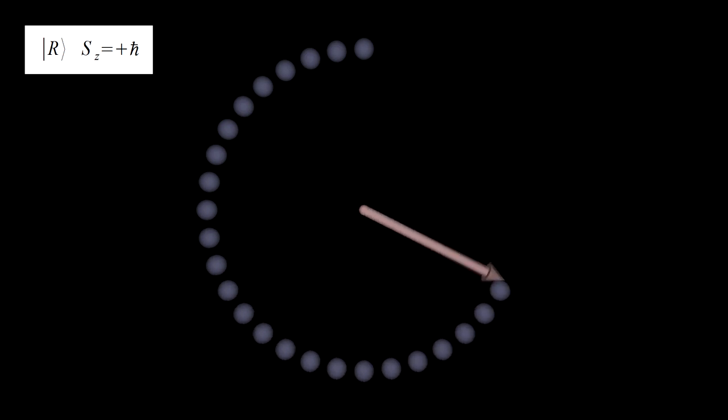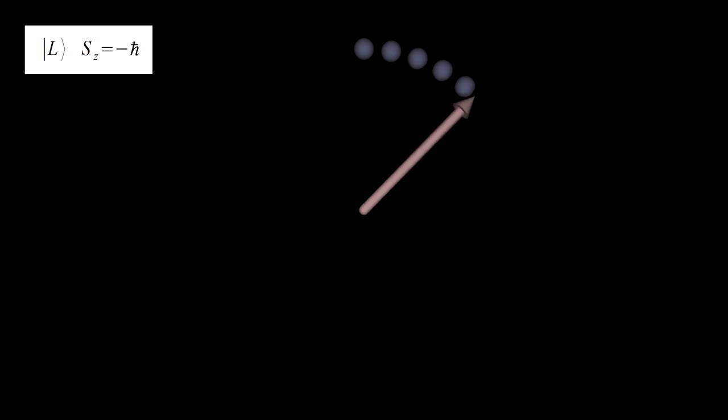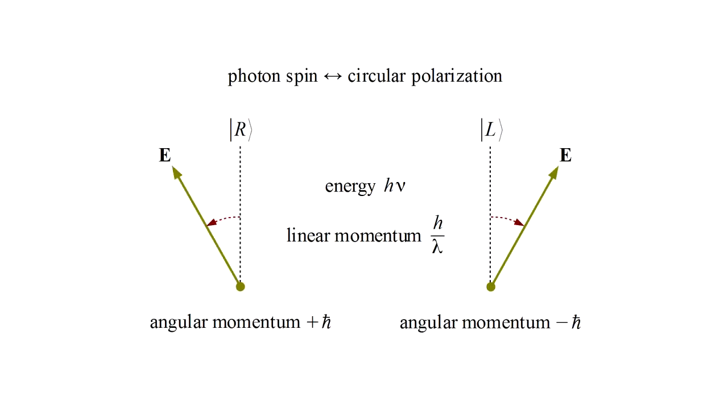We've seen that a photon with z component of spin angular momentum h-bar corresponds to classical right-handed circular polarization, and the opposite component of spin corresponds to left-handed circular polarization. So it seems we've got the photon figured out.